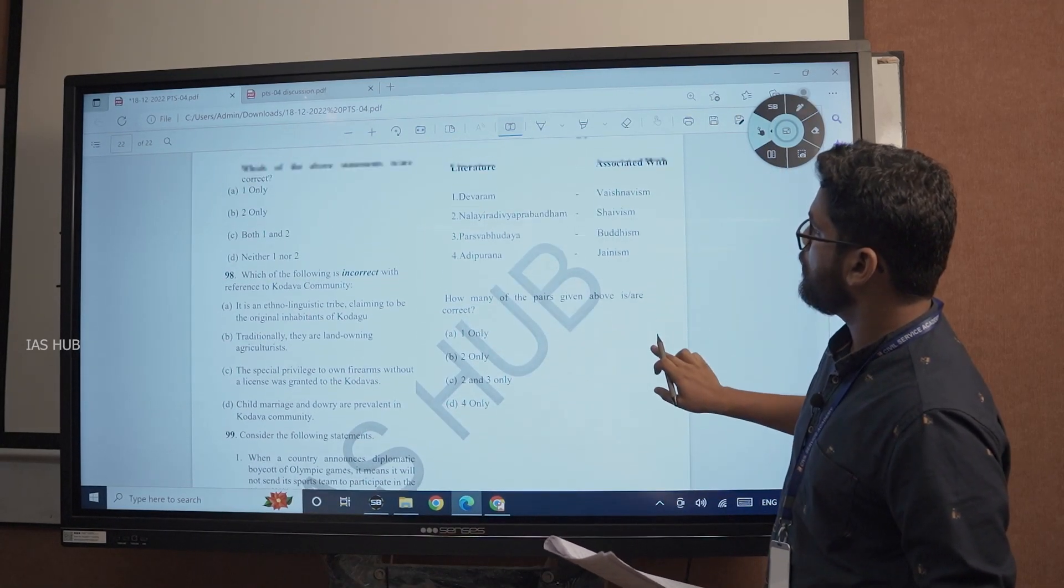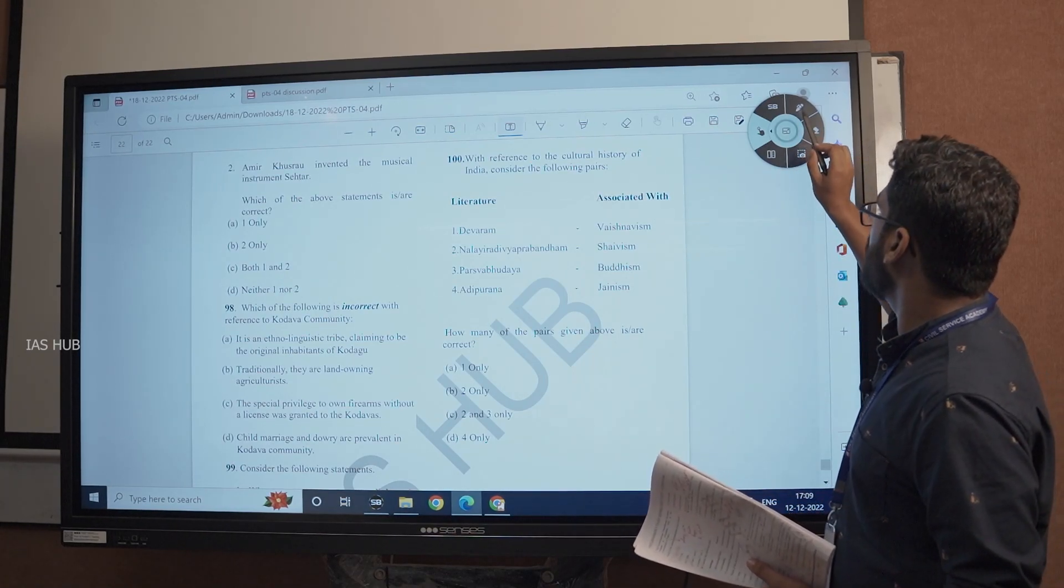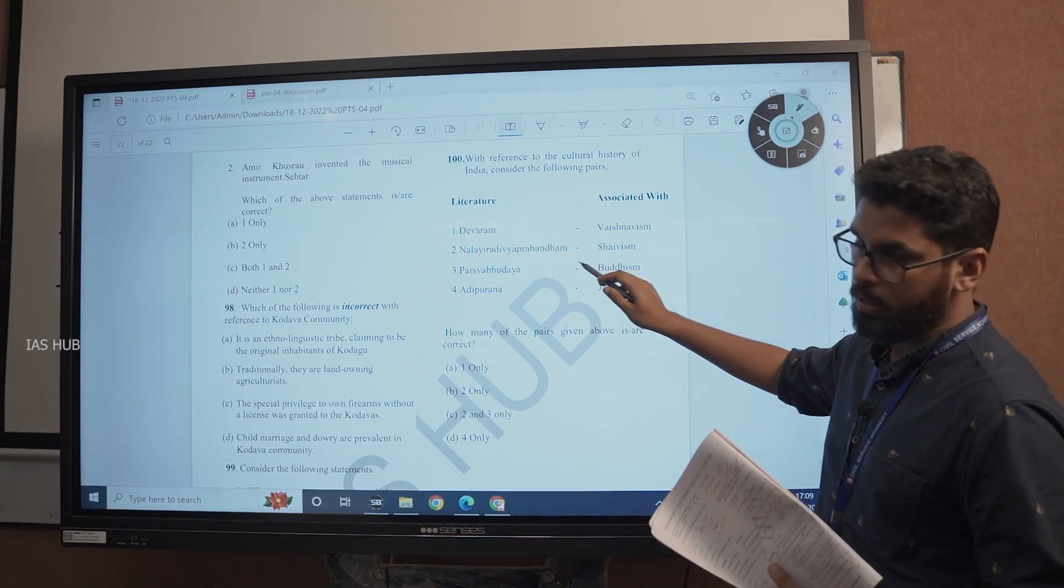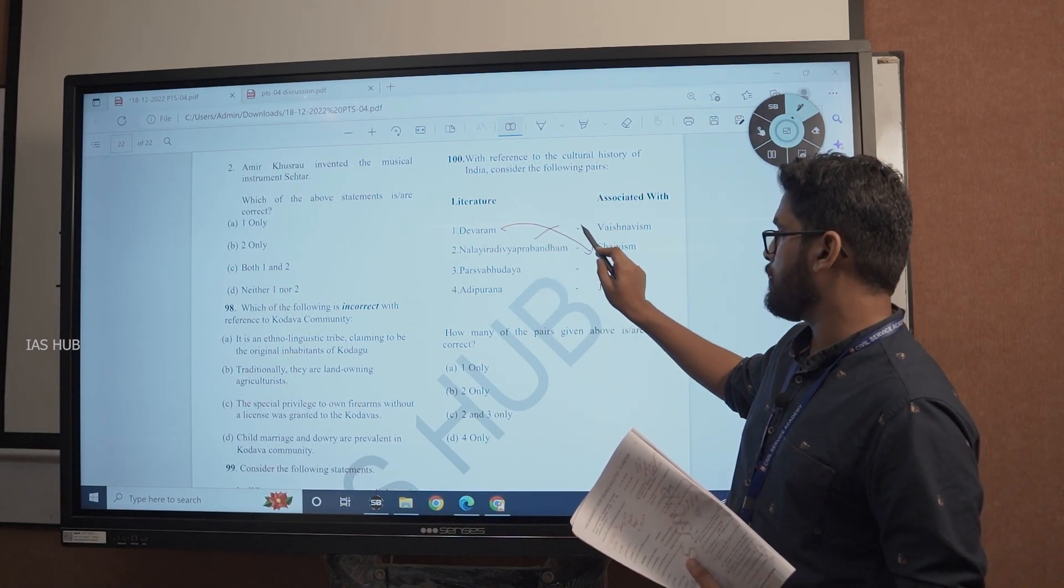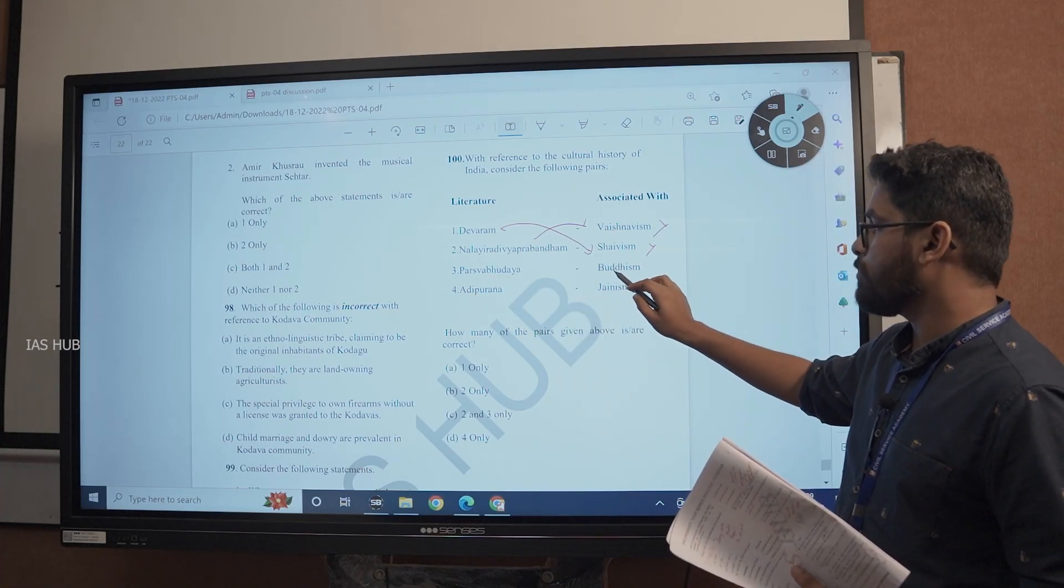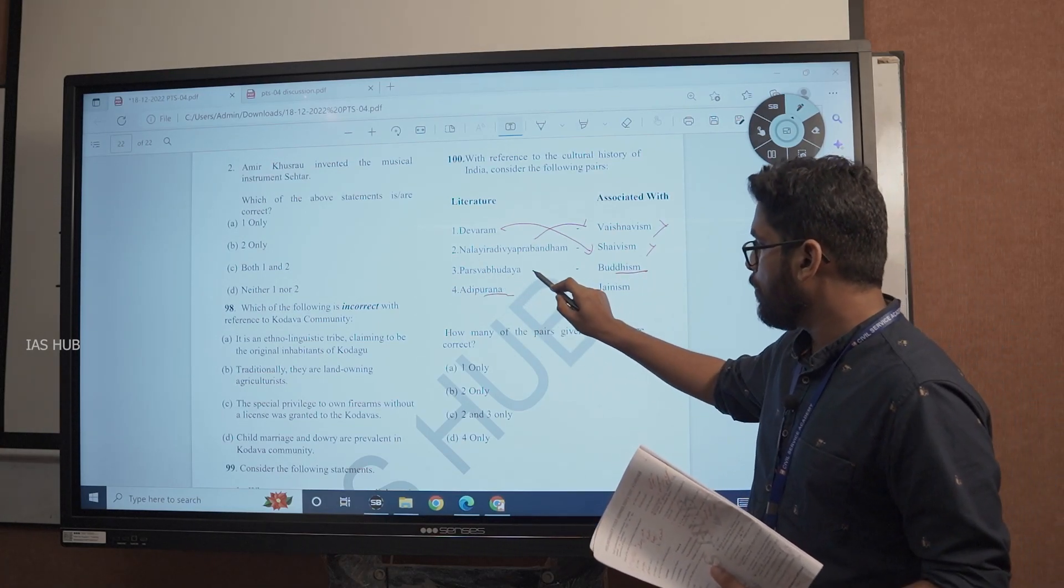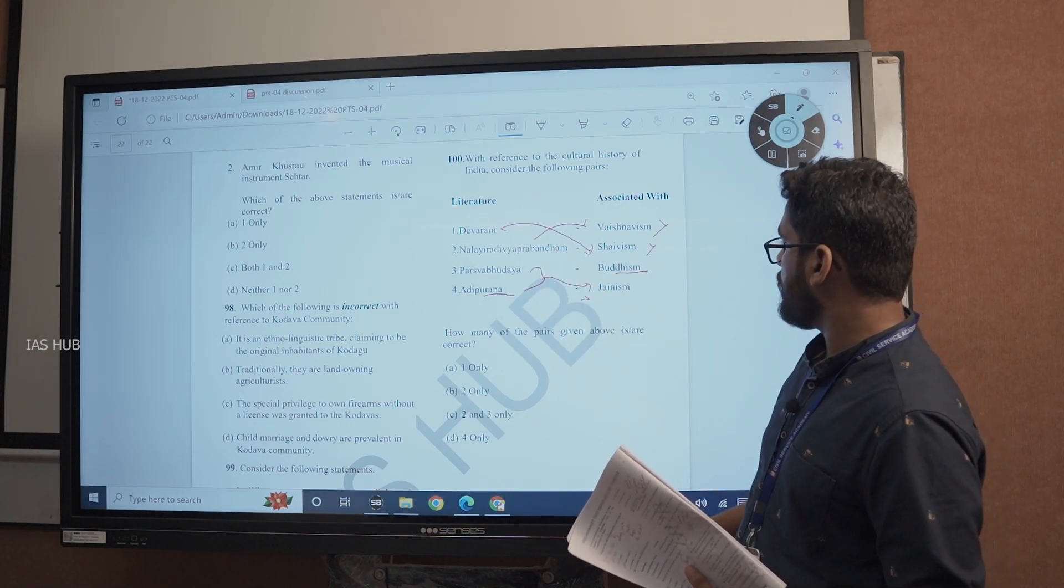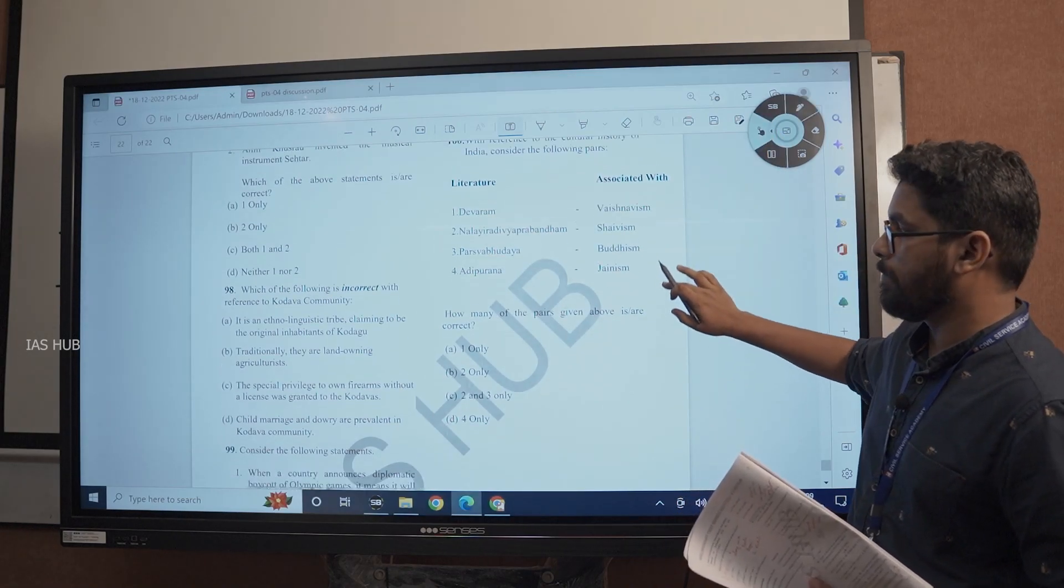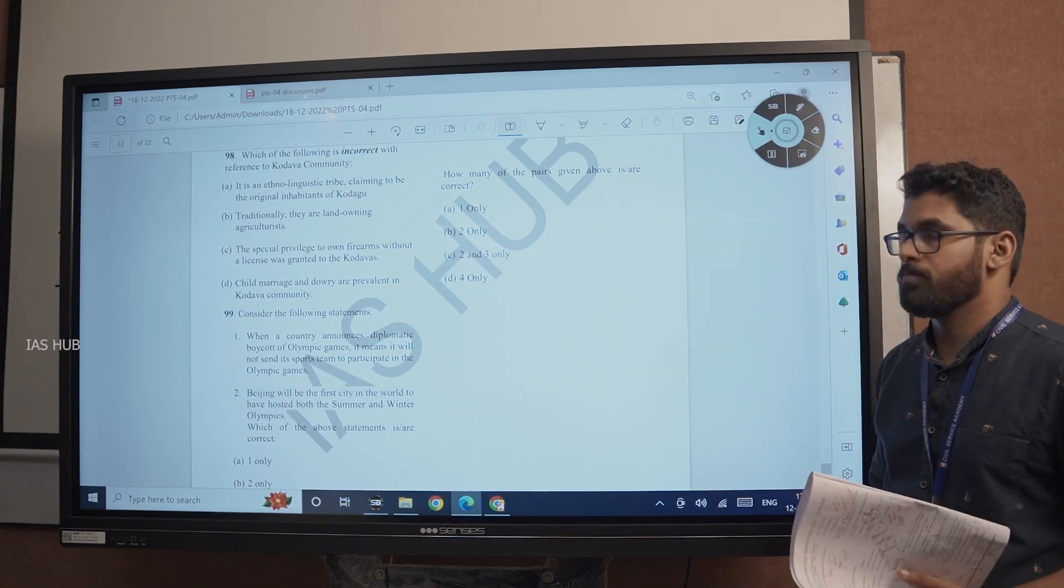Coming to the last question, very simple question, again from NCRT 7th standard NCRT. With reference to cultural history of India, consider the following pairs. The answer is 4 only. That's all. Thank you.